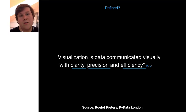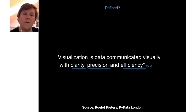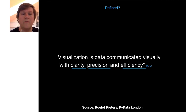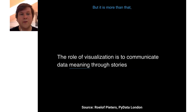Now let's consider a bit of theory: how would we define visualization? We use the definition from Tufte, who wrote one of the most important books on visualization. For him, visualization is data communicated visually with clarity, precision, and efficiency. The role of visualization is to communicate data meaning through stories.